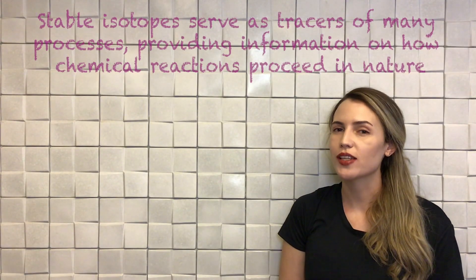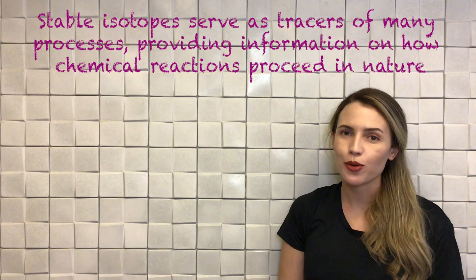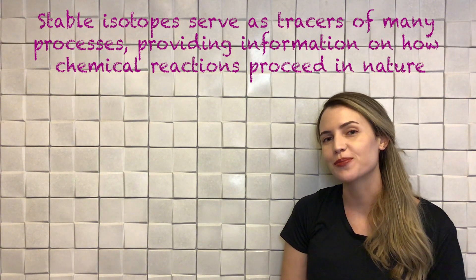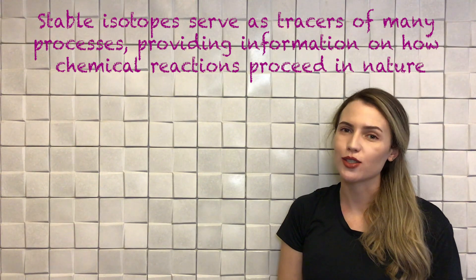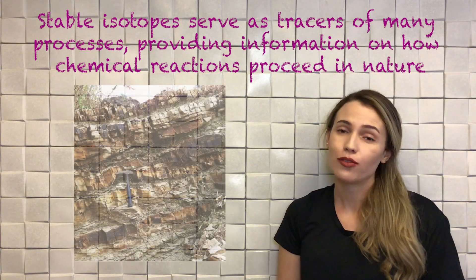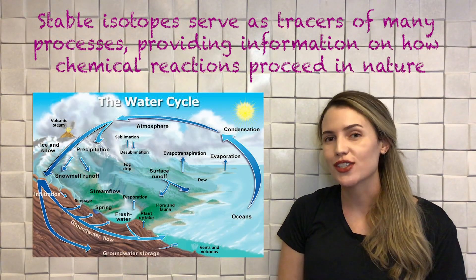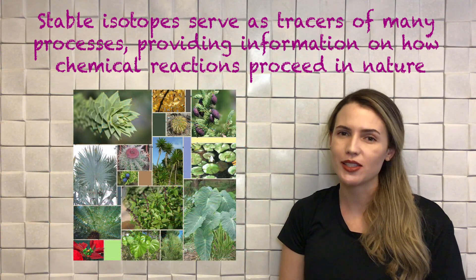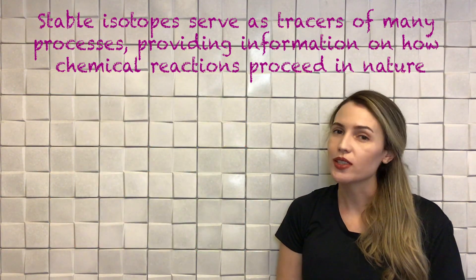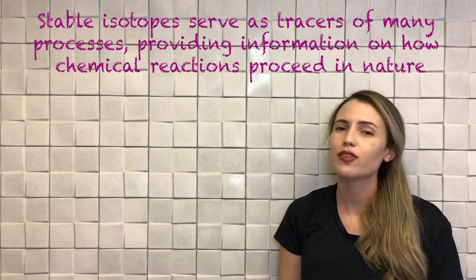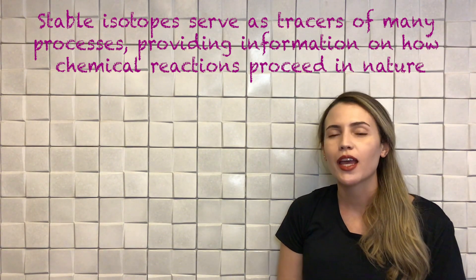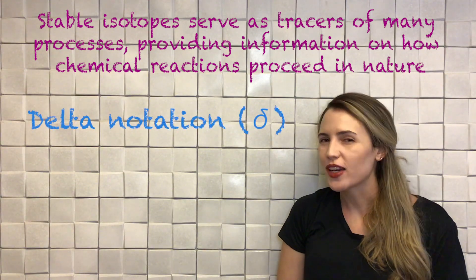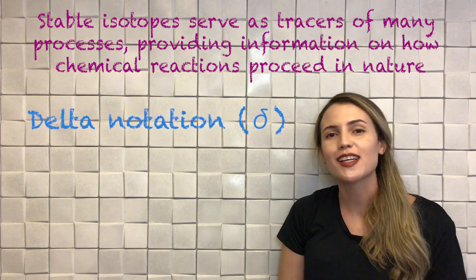Stable isotopes serve as tracers of many processes, providing information on how chemical reactions proceed in nature. For instance, we can use stable isotopes to understand rock-forming processes, the hydrological cycle, and also physiological and environmental signals in plant materials. To quantify the changes in the relative abundance of these isotopes involved in these processes, we use the delta notation. But what is the delta notation and where does it come from?